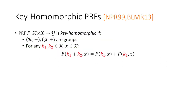The concept of keyhomomorphic PRFs was introduced by Naor et al. from 1999 and was formalized by Boneh et al. in 2013. We say that a PRF is keyhomomorphic if it satisfies the following properties. First, we require that the key space and the output space form groups—they don't necessarily have to be the same group, but let me denote the group operations with addition for this talk.